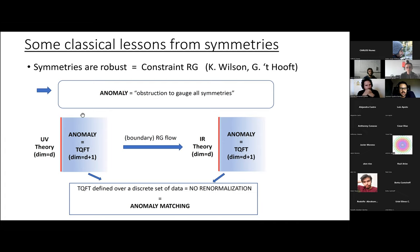The anomaly is not a real pathology of a given theory but provides a very powerful tool. This can be seen through so-called anomaly inflow: a convenient way to describe an anomaly of global symmetries by coupling our theory to a bulk in one higher dimension. This bulk hosts a topological field theory describing the anomaly, and since RG flow is inherently local, it cannot affect the anomaly theory. So the IR theory, whatever it is, has to reproduce this anomaly — this is anomaly matching.